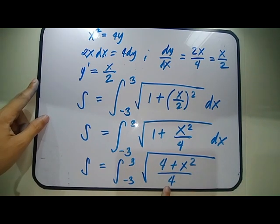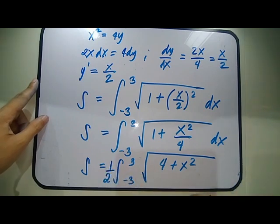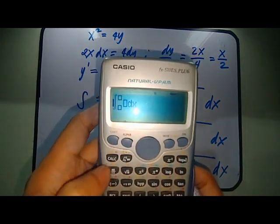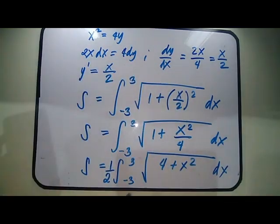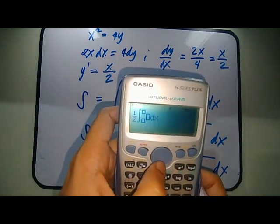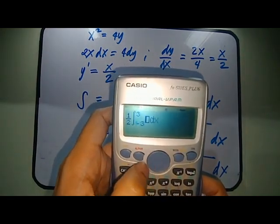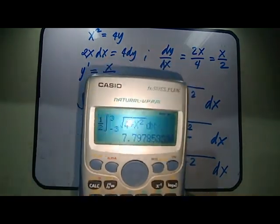So S = (1/2) ∫ from −3 to 3 of √(4 + X²) dX. We can use a calculator to evaluate this directly. Inputting the expression, we get S ≈ 7.8 units. That is the final answer.